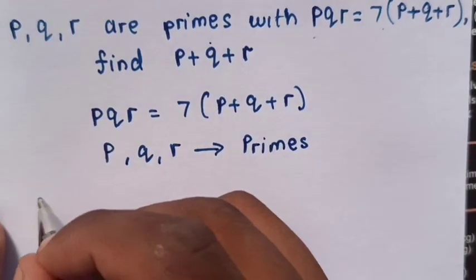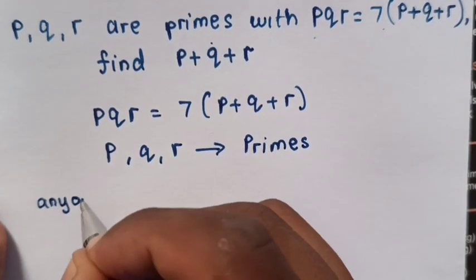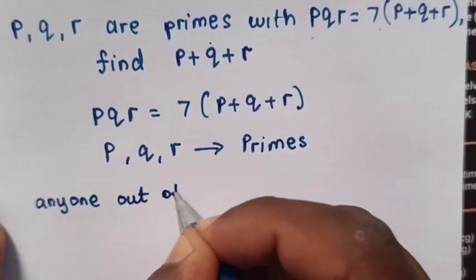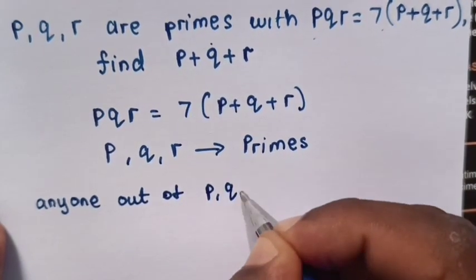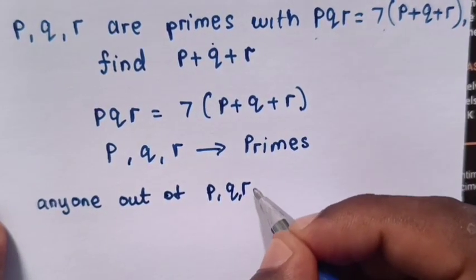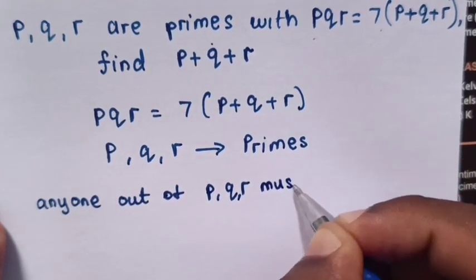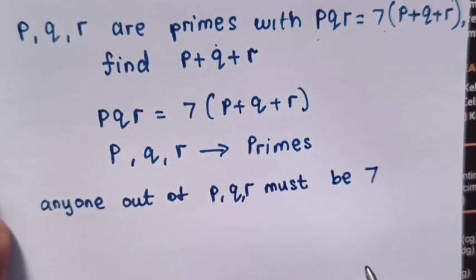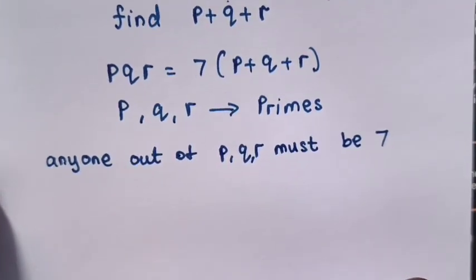Then anyone, either P or Q or R is 7, because 7 is also prime. So anyone out of P, Q, R must be 7.